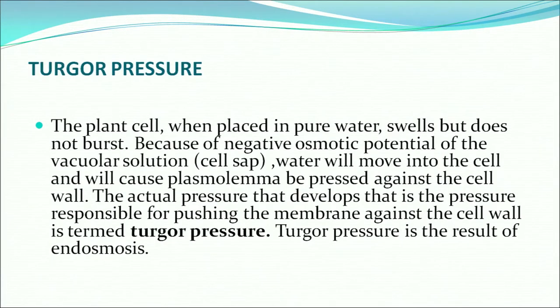What is turgor pressure? When a plant cell is placed in pure water, it swells but it does not burst — because of the negative osmotic potential of the vacuolar solution, which is nothing but the cell sap. Water moves into the cell and causes the plasma membrane to press against the cell wall. The actual pressure responsible for pushing the membrane against the cell wall is called turgor pressure. Turgor pressure is the result of endosmosis and it allows the plant cell to stretch but does not allow the cell to burst.